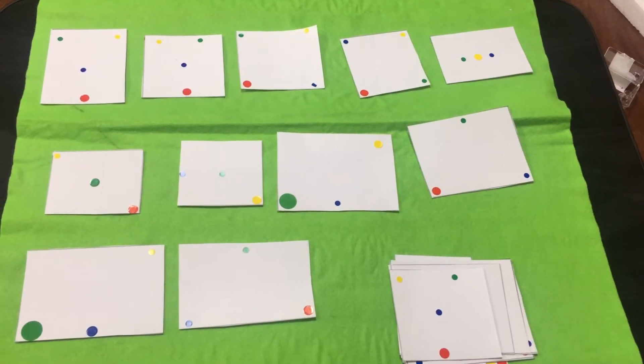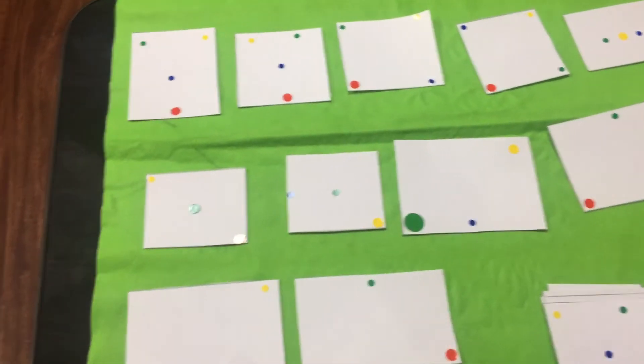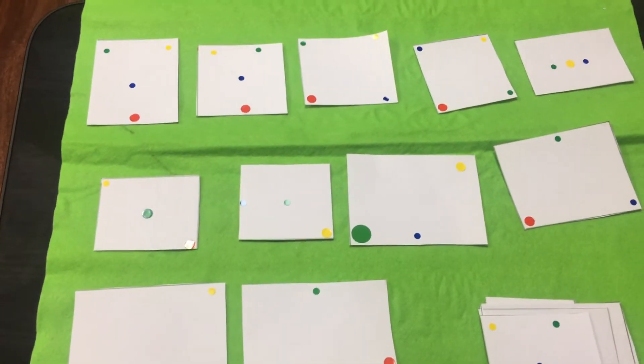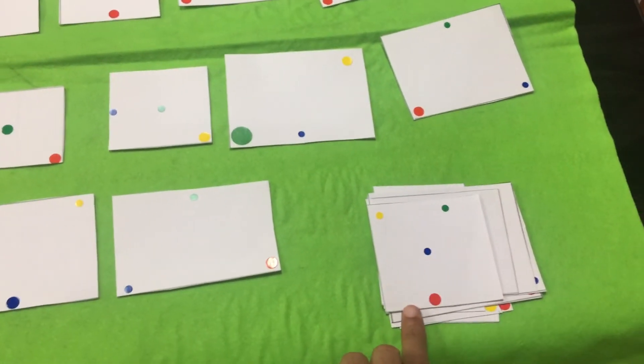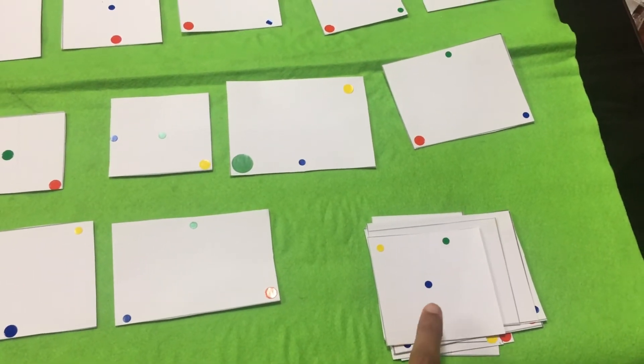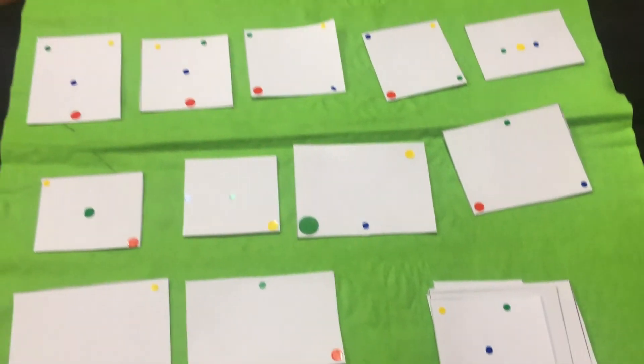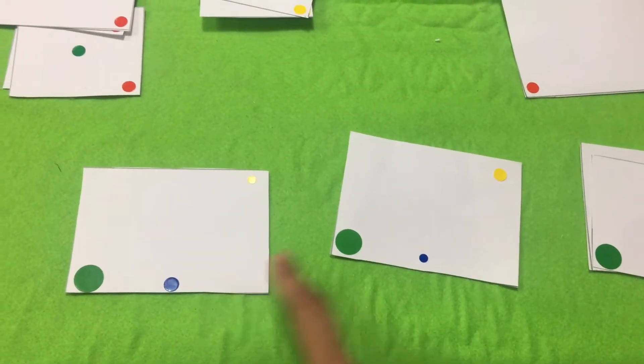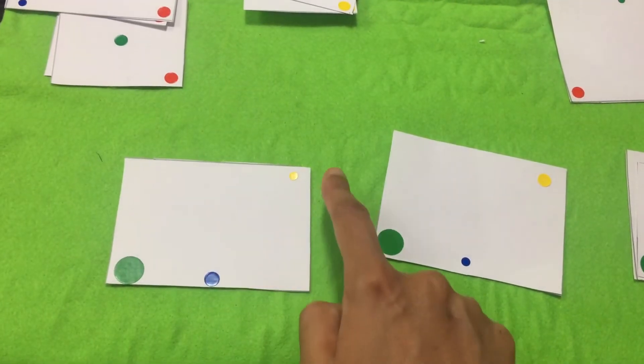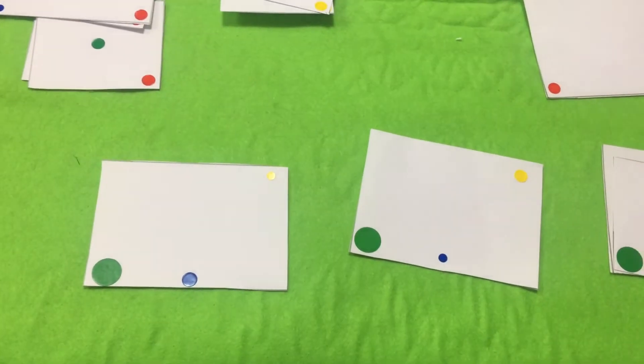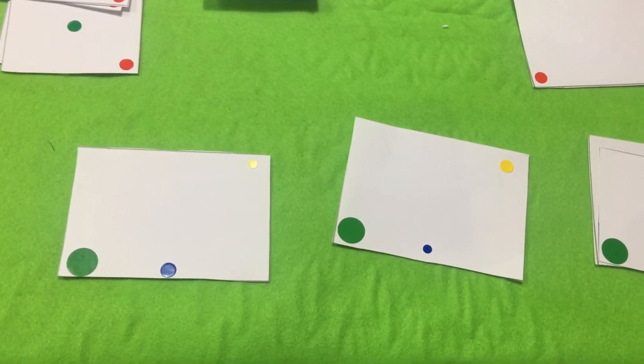The next activity is pattern matching activity. Here I have made a simple card with dot stickers, and here is the matching card. He needs to find which card matches this and place it over it. If you see, these two cards, the colors look the same but the size is different. I have made few cards so that he needs to look at the size also when he is sorting it.